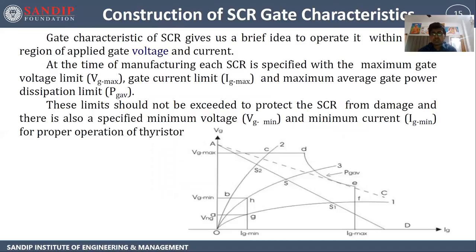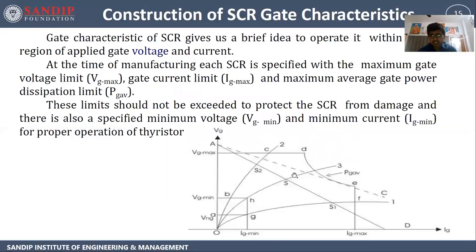Next is the gate characteristic of SCR. Gate characteristic is plotted between gate voltage versus gate current — if we apply gate voltage, what is the effect on gate current? For maximum gate voltage, maximum gate current flows; for minimum gate voltage, minimum gate current flows. The device must operate within a safe operating region defined by these characteristics.